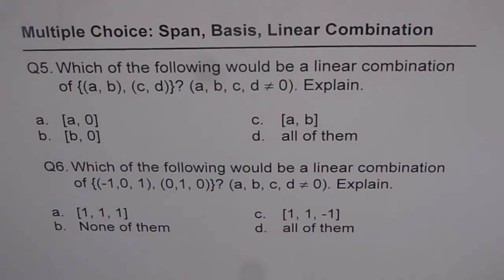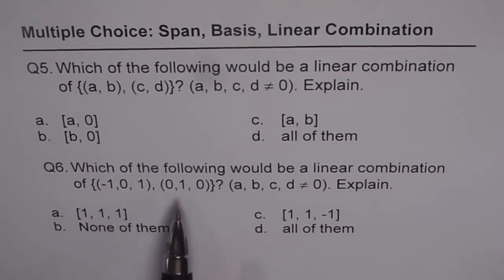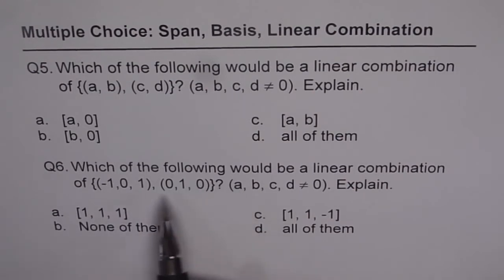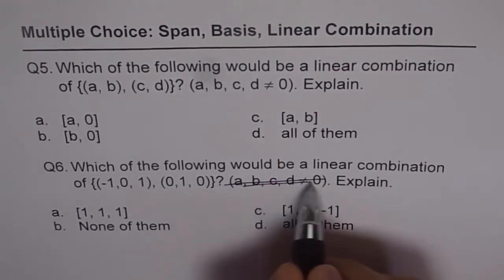Question 6: Which of the following would be a linear combination of these two vectors? We have two vectors here. One is (-1, 0, 1), the other is (0, 1, 0). The condition here is not required. Explain.